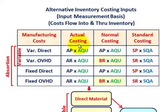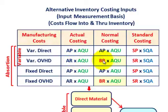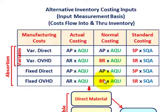For actual costing, you use the actual rate or price times actual quantity used. For normal costing, variable direct costs use actual price times actual quantity — same as actual costing — but variable overhead uses a budgeted rate times actual quantity instead of the actual rate. Similarly, fixed direct costs are actual price times actual quantity, while fixed overhead under normal costing uses a budgeted rate times actual quantity.